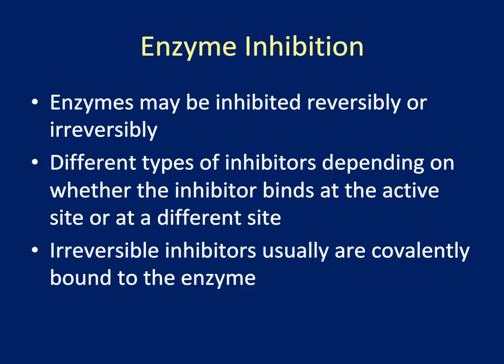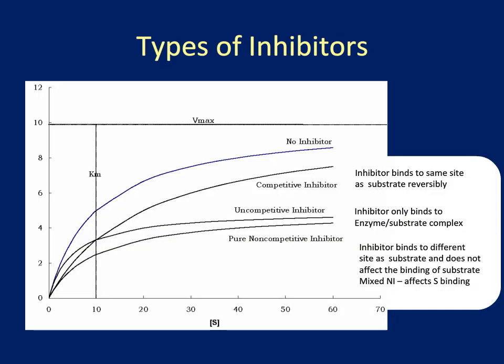During lab, you'll investigate an inhibitor of lactate dehydrogenase. There are many different types of inhibitors. The first class you can divide inhibitors into are reversible inhibitors and irreversible inhibitors. Irreversible inhibitors tend to be covalently bound to the enzyme. Shown here is a graph of the Michaelis-Menten curve for a specific enzyme with no inhibitor in blue, and with a competitive inhibitor, an uncompetitive inhibitor, and a pure non-competitive inhibitor.